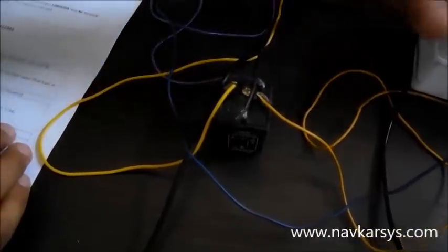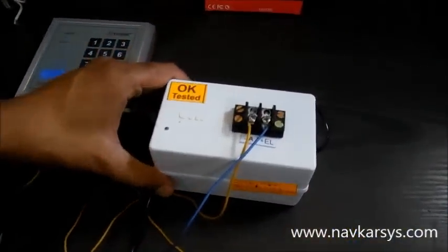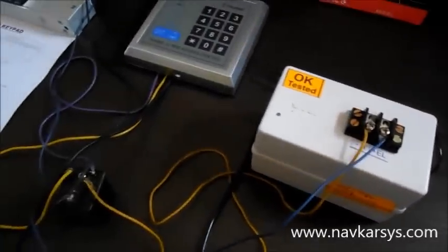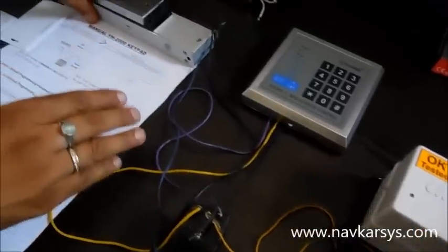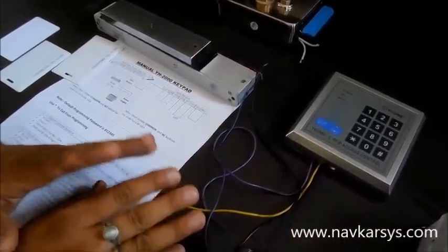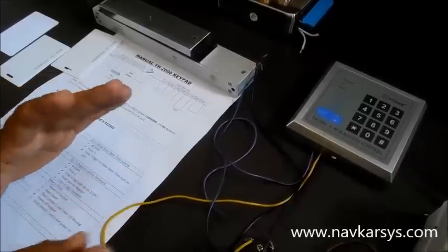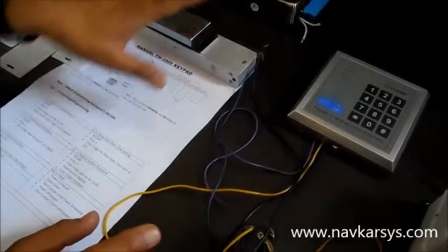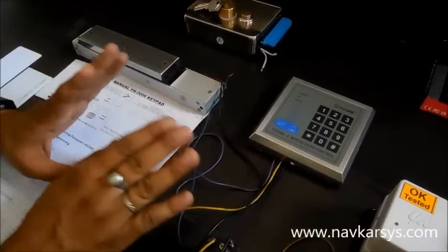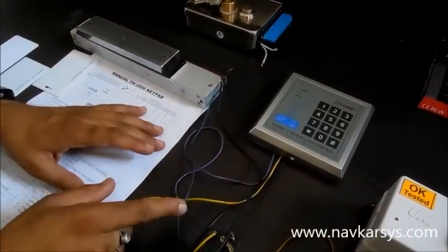You can use this relay and power supply, which is a 24 volt AC power supply, along with the system. The wiring diagram will be provided. It is very easy. The wiring for electromagnetic lock and electronic lock is quite the same, no difference. Just the jumper setting is different. The rest of the wiring is the same.